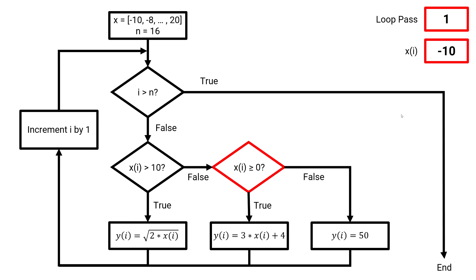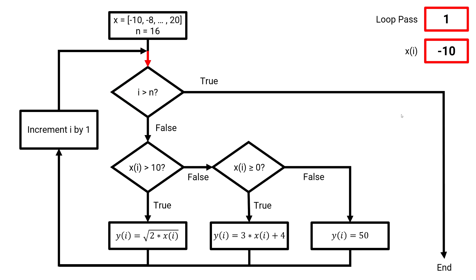Next, we get to our else if statement, where we see: is x greater than or equal to 0? Again, the answer is no — that statement is false. So now we're at our else statement, and our variable y is assigned the value of 50. So 50 is the value in the first element in our array for y. Next, we increment our loop variable, or our array index, by 1. Now our loop variable has a value of 2, and we're moving on to our second loop pass.